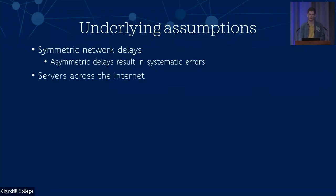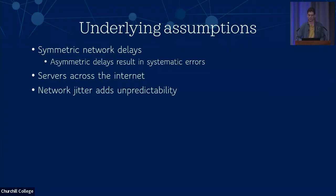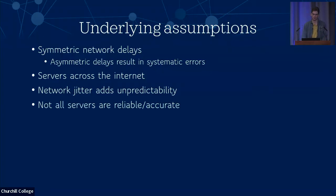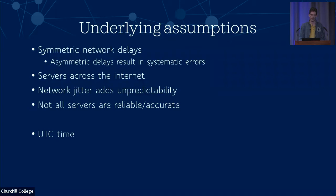We're also going to assume that our time servers are spread out across the internet, so there's going to be variable latencies and network jitter which adds variability between different samples to the same server. We also can't trust servers to be reliable or accurate — there may be some that are unreliably synchronized or some that are actively malicious, so we're going to have to account for these factors in our algorithms. One thing to note as well is that we use UTC for NTP, so anything like time zones is going to be handled by the operating system on top of that.